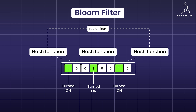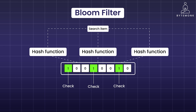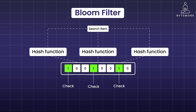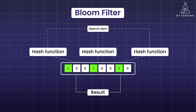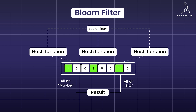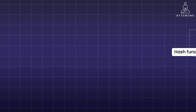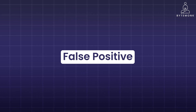To search for an item, we again use the hash functions on its name and check the corresponding switches in the array. If any switch is off — that is zero — we know for sure the item isn't there: that is a quick no. That's because if the item existed, its addition would have turned on all those switches. But here is the catch: even if all switches are on, it still might not be there, because other items might have turned on those same switches, leading to a maybe answer. This is called a false positive — it's like having multiple roommates using the same light switch.